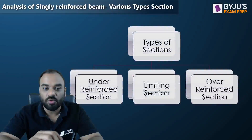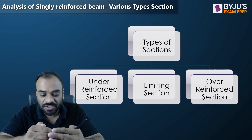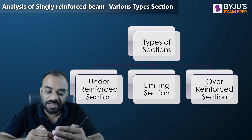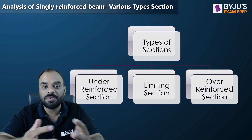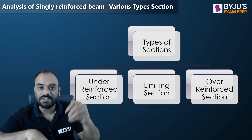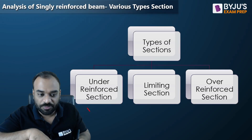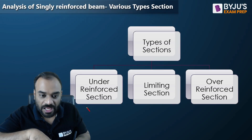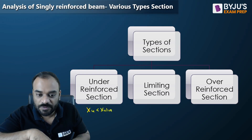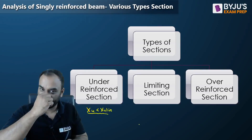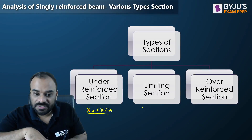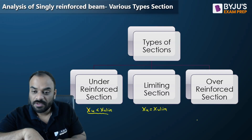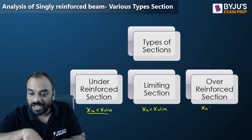Now let's understand the various types of sections, because by comparing the actual depth of neutral axis and the limiting depth of neutral axis we can determine which particular section we have. If the actual depth of neutral axis is less than the limiting depth of neutral axis, the section is known as an under-reinforced section. For a limiting section, the actual depth and limiting depth of neutral axis are equal. For an over-reinforced section, the actual depth of neutral axis is greater than the limiting depth of neutral axis.